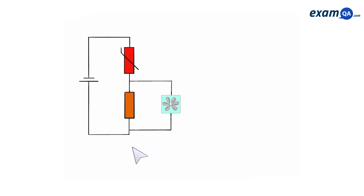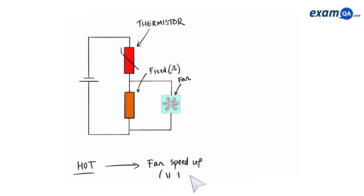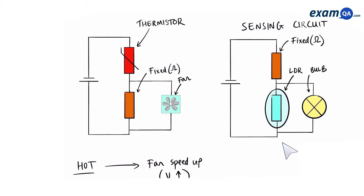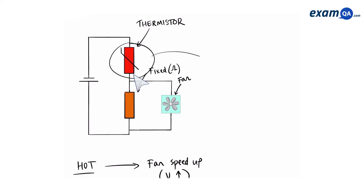Now we're going to look at a sensing circuit which involves a thermistor and a fan. The goal is that when the temperature rises, we want the fan to turn on or begin to spin faster, so we want the voltage of the fan to increase. This looks quite similar to the LDR circuit. However, when you draw the sensing circuit of a thermistor, the thermistor goes on its own, whereas the LDR went with its component. A good way to remember this is that a thermistor is not a fan of its fan.